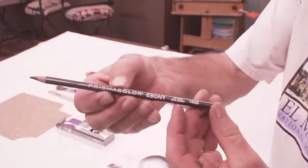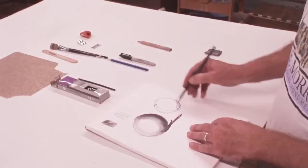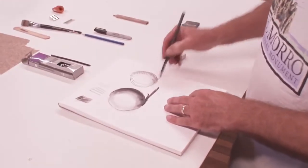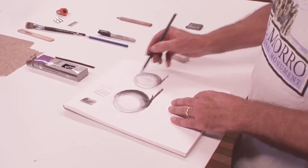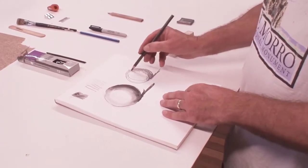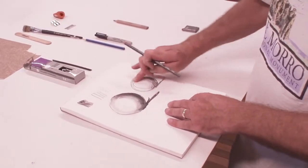This is an ebony colored pencil. It's about a number 2B. It's harder than the willow charcoal but not as hard as a number 2 pencil. So I use that for smaller lines, smaller details.